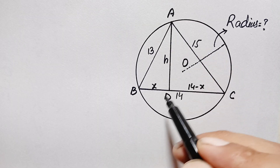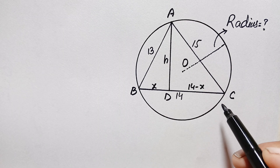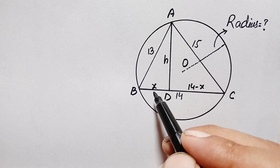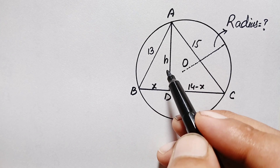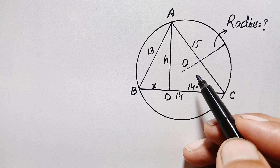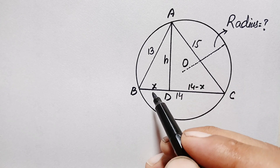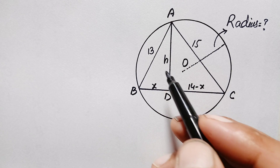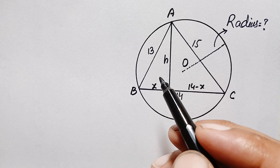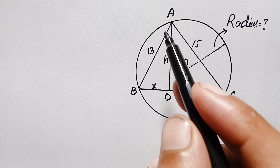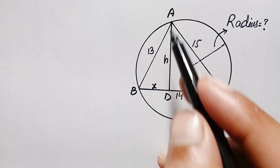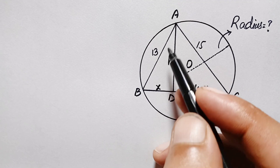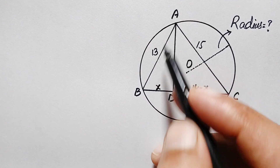Let us suppose h is the height of the triangle. Here we have two right angle triangles: triangle ABD and triangle ADC. First of all, we will find the value of x and h, then we will find the radius of this circle. To do that, we will apply the Pythagorean theorem in both right angle triangles.